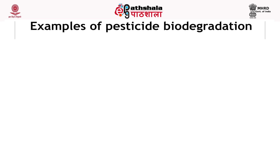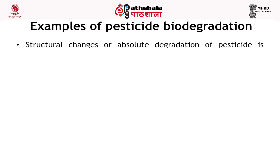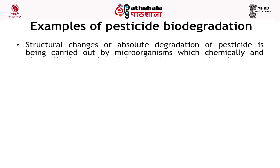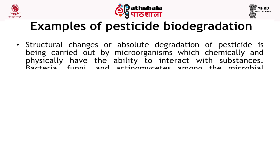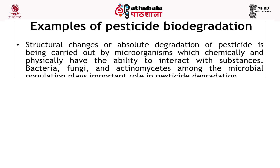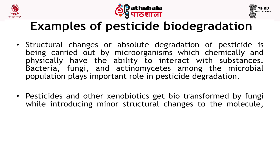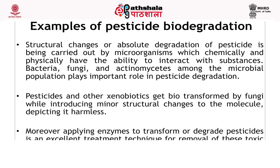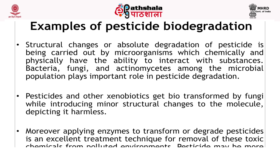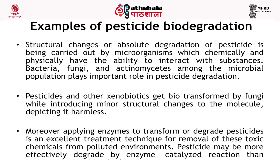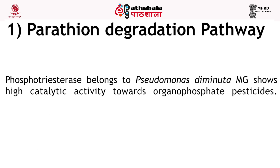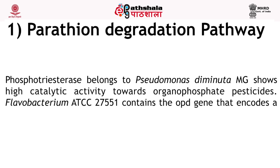There are some examples given for the pesticide biodegradation processes. Structural changes or absolute degradation of pesticides is carried out by microorganisms which chemically and physically have the ability to interact with substances. Bacteria, fungi and actinomycetes among the microbial population play an important role in pesticide degradation. Pesticides and other xenobiotics get biotransformed by fungi while introducing minor structural changes to molecules, making them harmless. Moreover, applying enzymes to transform or degrade pesticides is an excellent treatment technique for removal of these toxic chemicals from polluted environments. Pesticides may be more effectively degraded by enzyme-catalyzed reactions than existing chemical methods. Phosphotriesterase belonging to Pseudomonas diminuta MG shows high catalytic activity towards organophosphate pesticides as one example.